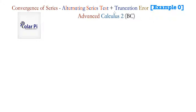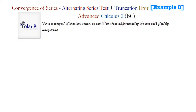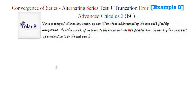What I said in example zero where we discussed the alternating series test is that the truncation error is basically, in a nutshell, what allows us to say how good an approximation we get to the value to which a convergent alternating series converges, if we use the nth partial sum.